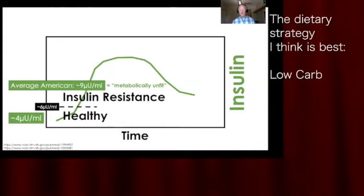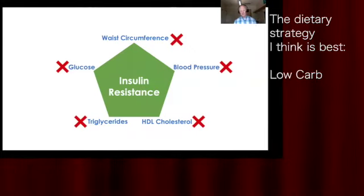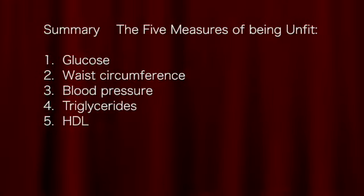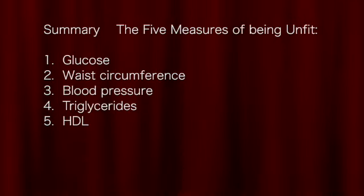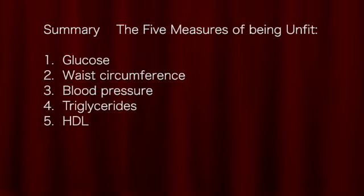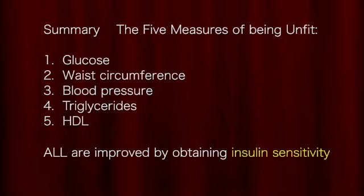The dietary strategy I believe is best is encompassed in the very name of this low-carb meeting. In conclusion, these are the aspects of the insulin resistance syndrome, nowadays referred to as the metabolic syndrome. The five measures of being metabolically unfit are: one, glucose; two, waist circumference; three, blood pressure; four, triglycerides; five, HDL. All are improved by obtaining insulin sensitivity.